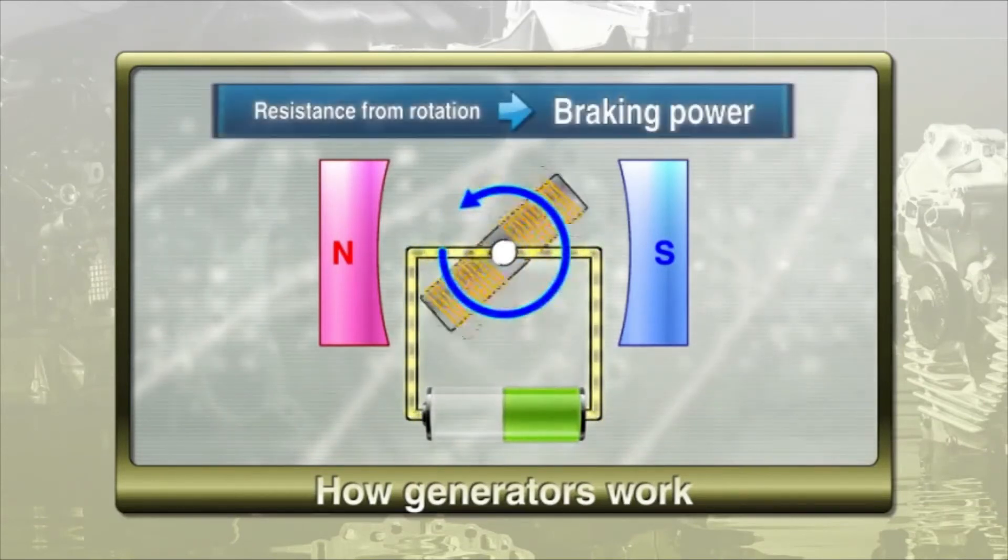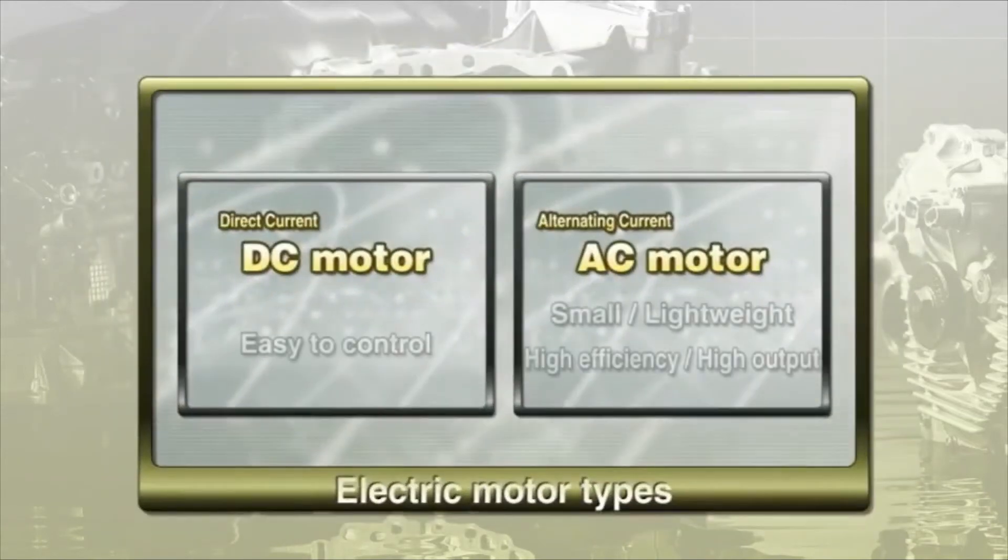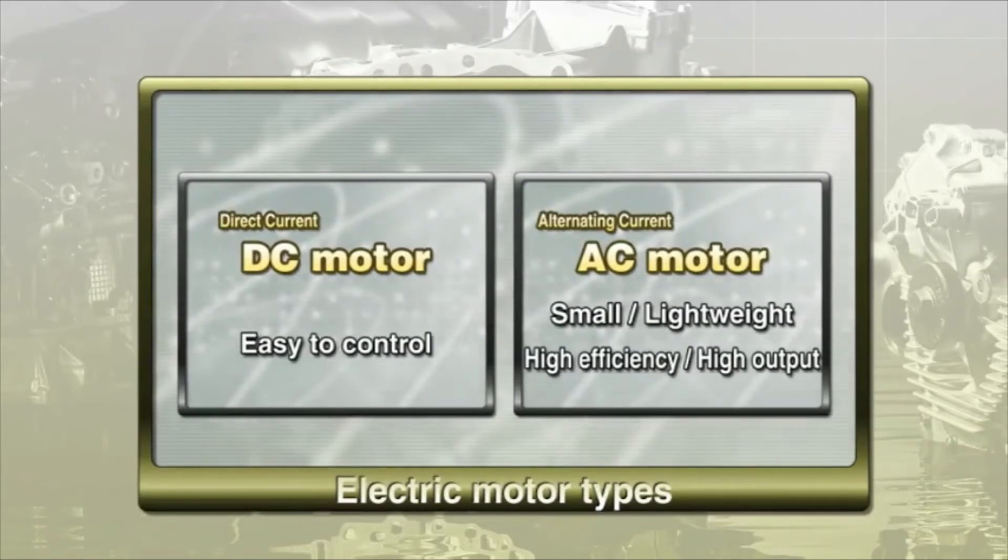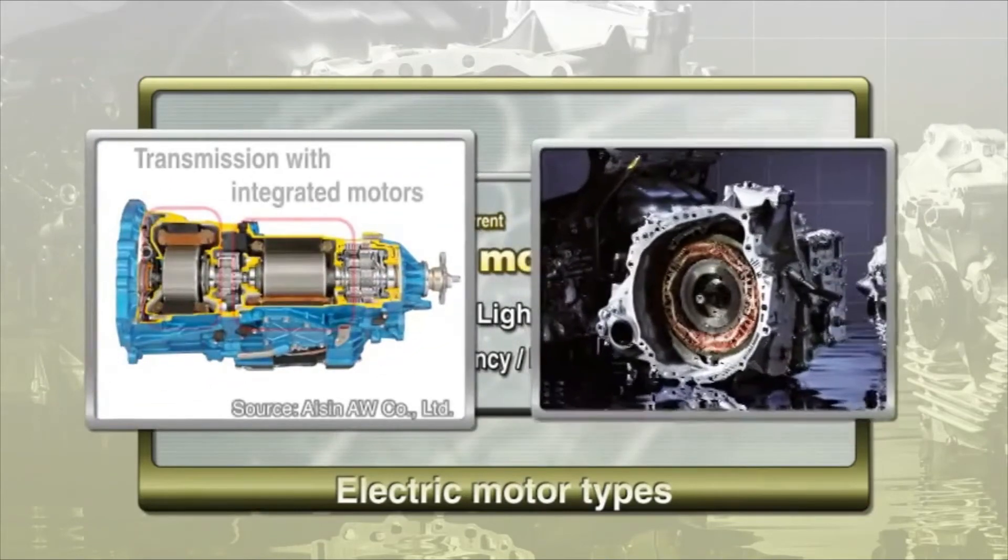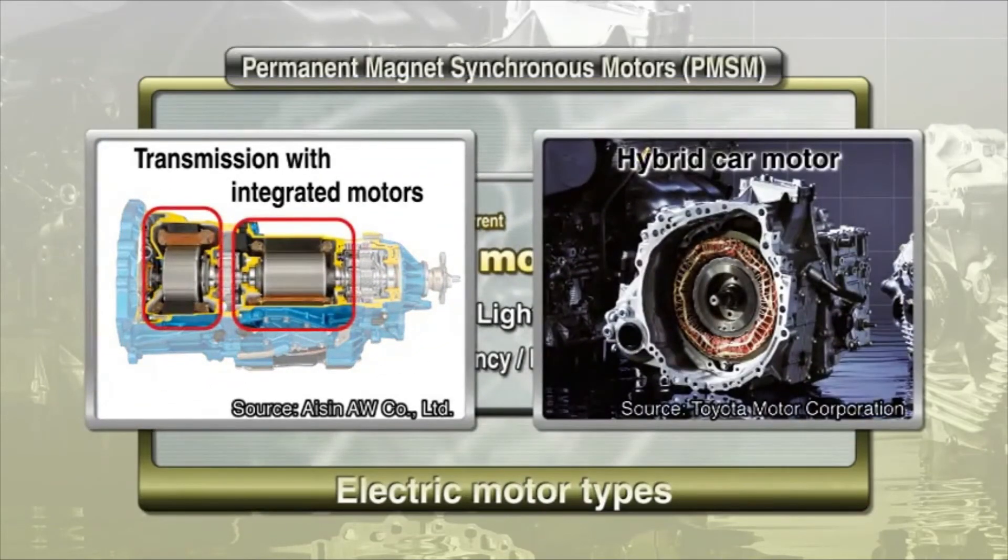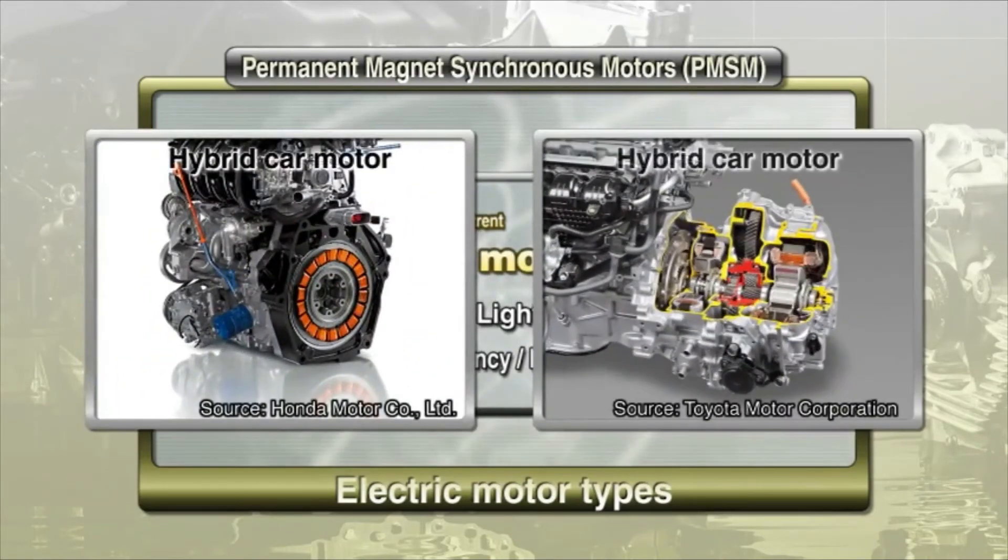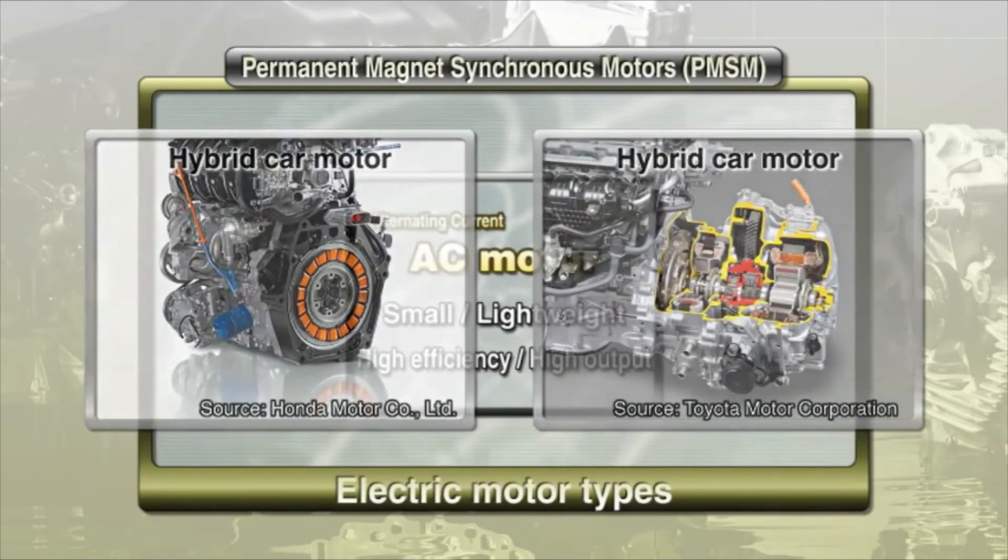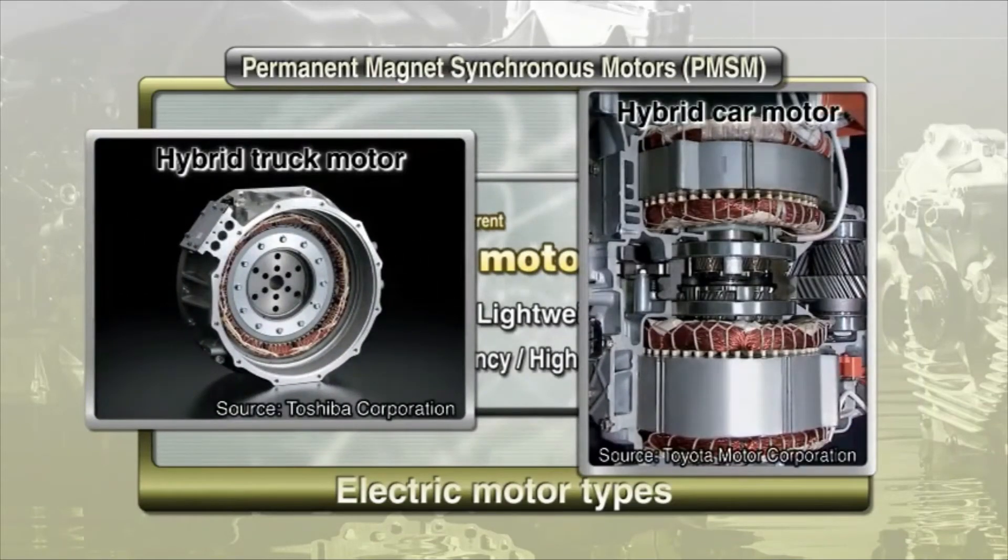Generally speaking, there are two types of electric motors: direct current and alternating current. The hybrid cars being sold in Japan are equipped with AC motors called the permanent magnet synchronous motor, or PMSM.